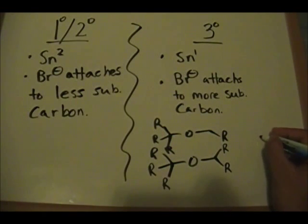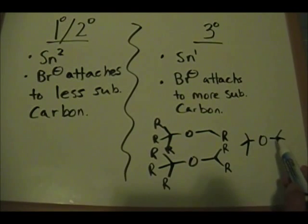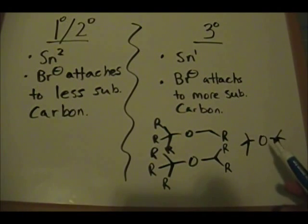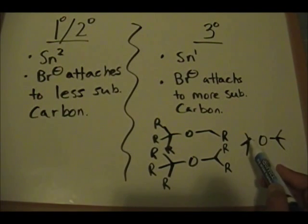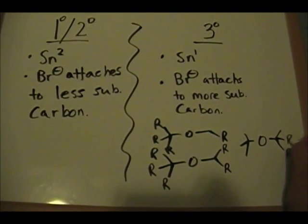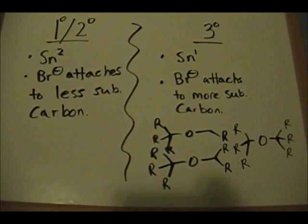The final tertiary example: if you have a tertiary and another tertiary carbon on both sides, it doesn't really matter which carbon you pick. The bromine, or the conjugate base of the strong acid, could attach to either position. The R groups here — any type of alkyl group — it really doesn't matter in this case.